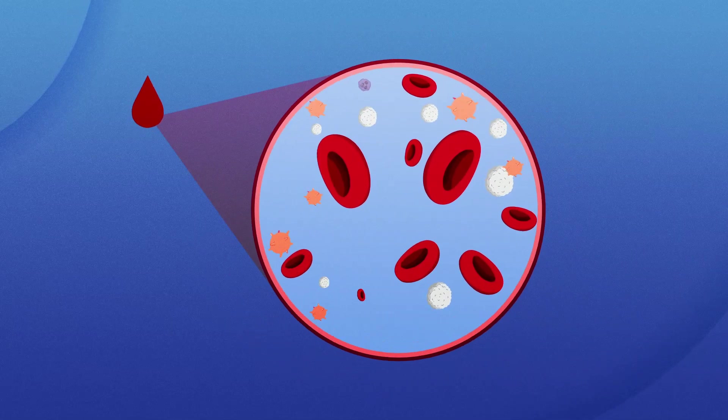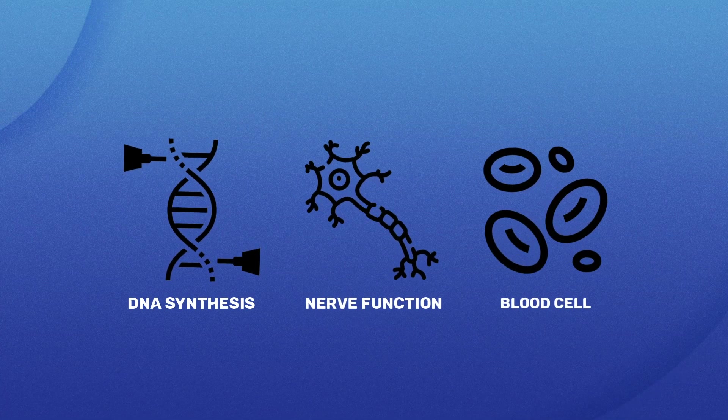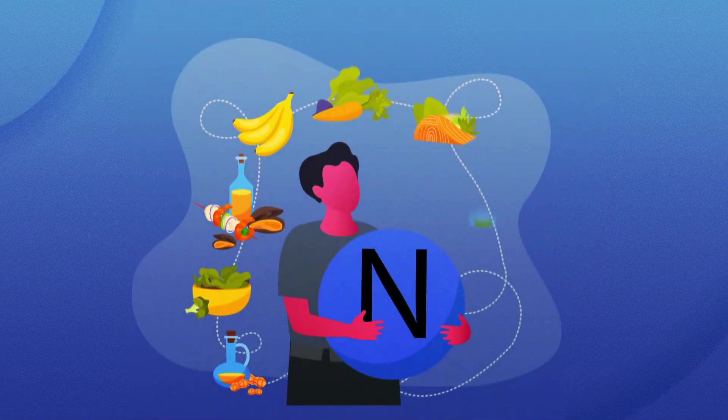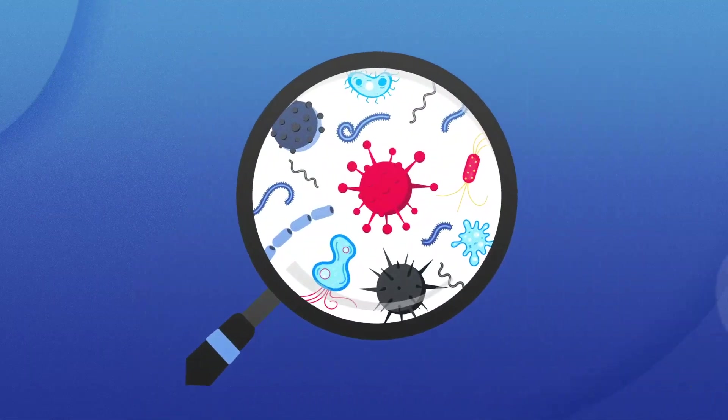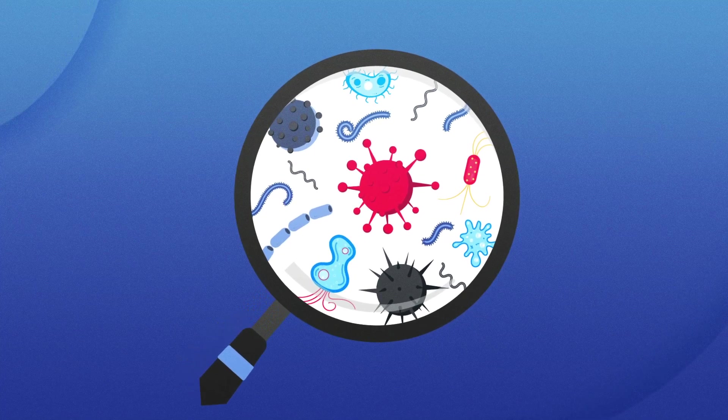These vitamins are vital for blood clotting, DNA synthesis, nerve function, and red blood cell production. By producing these nutrients, our gut bacteria bridge the gap and ensure we have an adequate supply for optimal health.